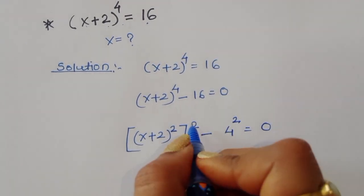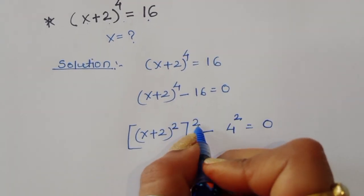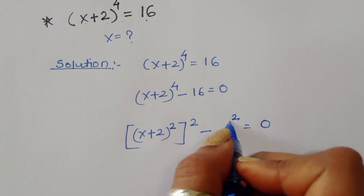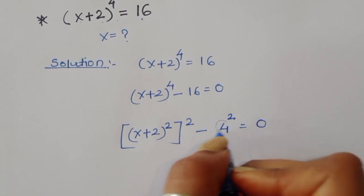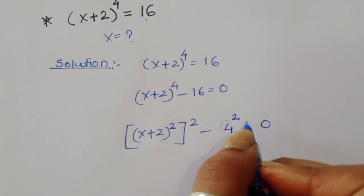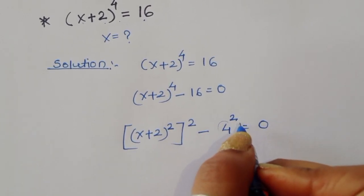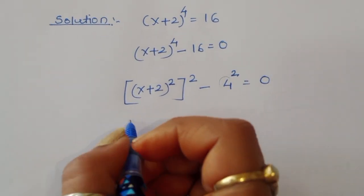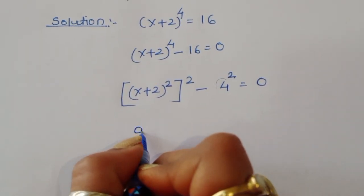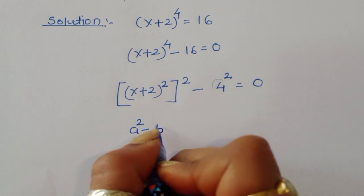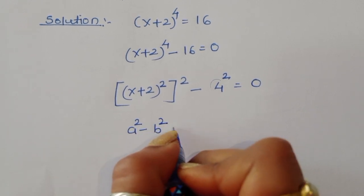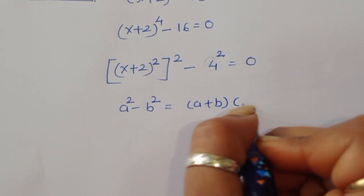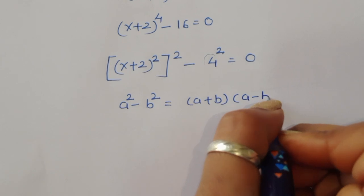If you can see, (x + 2)² is a square — this is 'a' squared — and 4² is 'b' squared. So this is the formula a² minus b², which equals (a + b)(a − b).